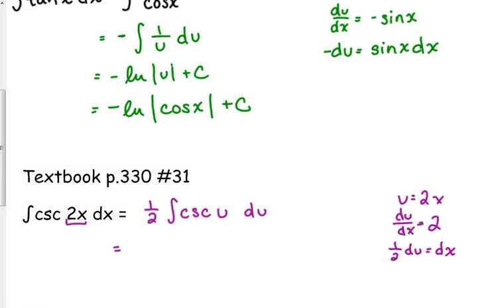So the integral of cosecant is what? So negative 1 half, natural log, absolute value, cosecant. I'm going to go ahead and plug my u back in there.